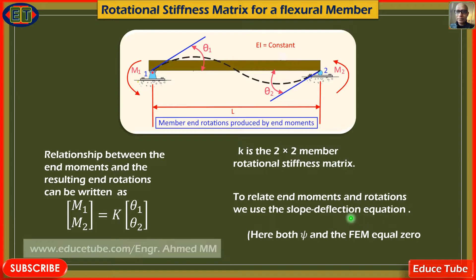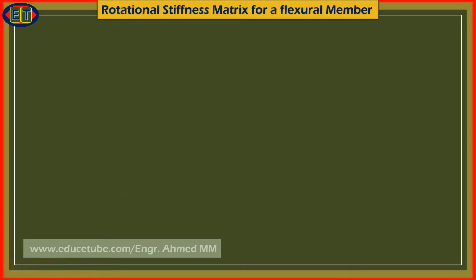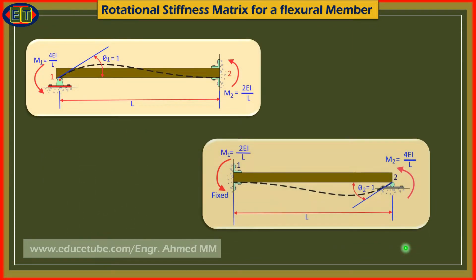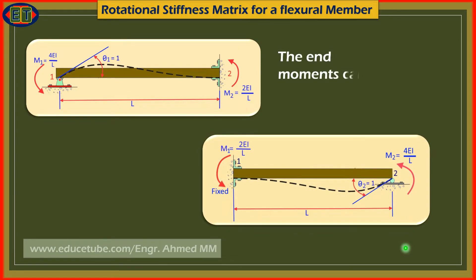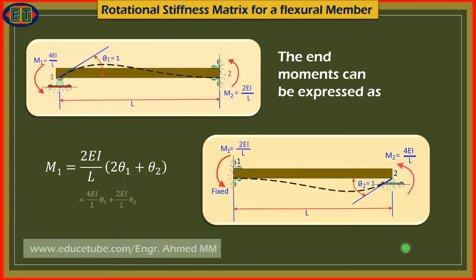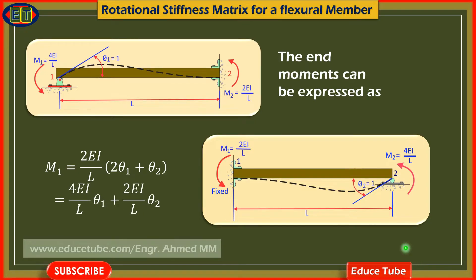Here, both psi and the fixed-end moment are considered equal to zero, because there are no loads applied along the member axis. So we consider psi and fixed-end moment equal to zero. The end moment can then be expressed as M1 equal to 2EI over L times the factor (2 theta1 plus theta2).